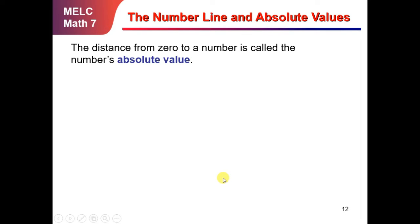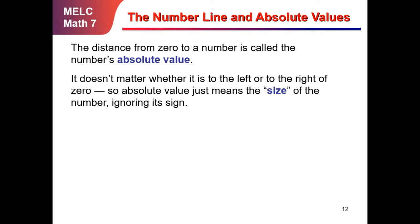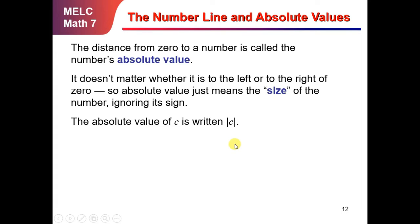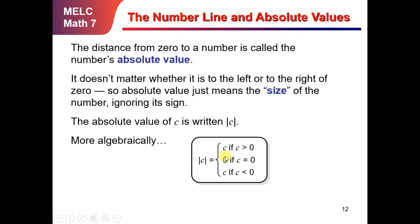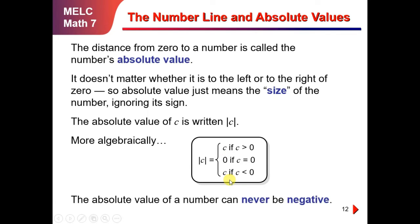The distance from 0 to a number on the number line is called the number's absolute value. It doesn't matter whether it is to the left or to the right of 0. Absolute value just means the size of the number, ignoring its sign. The absolute value of C is written with parallel bars around the value or variable, read as 'the absolute value of C.' Algebraically, the absolute value of C equals C if C is greater than 0, equals 0 if C equals 0, and equals negative C if C is less than 0. The absolute value of a number can never be negative — remember that.